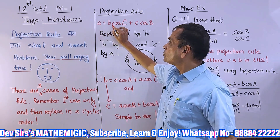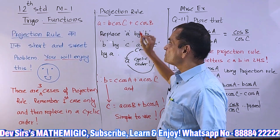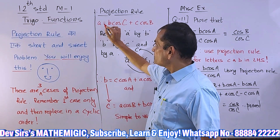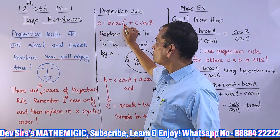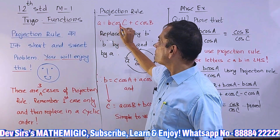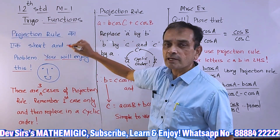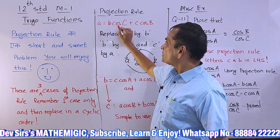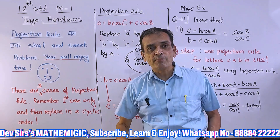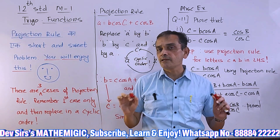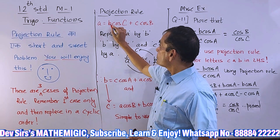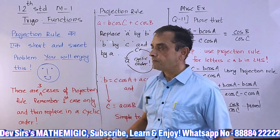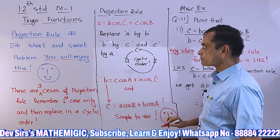The first case of projection rule is: a = b cos C + c cos B. Simple to remember — if you start with a, go to b, then go to c. So a = b cos C + c cos B. Remember: whatever is in front of sine and cos should be in capital letters.